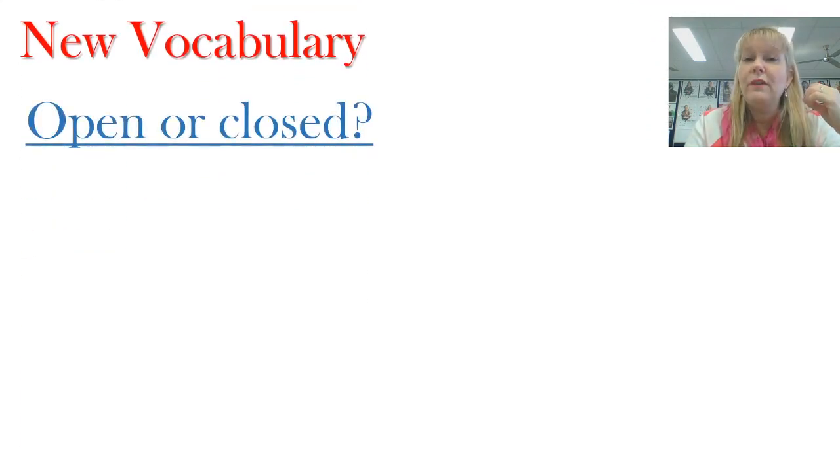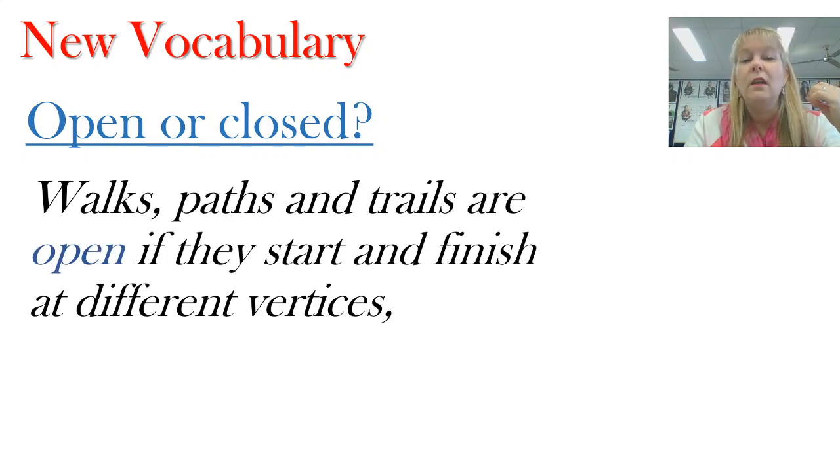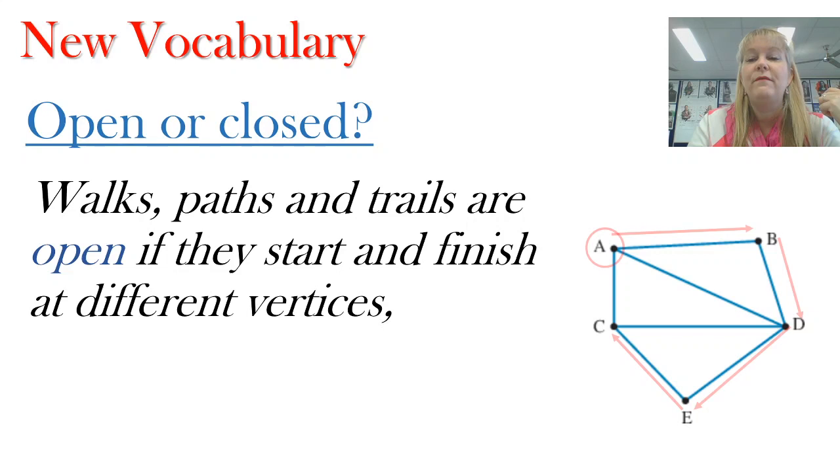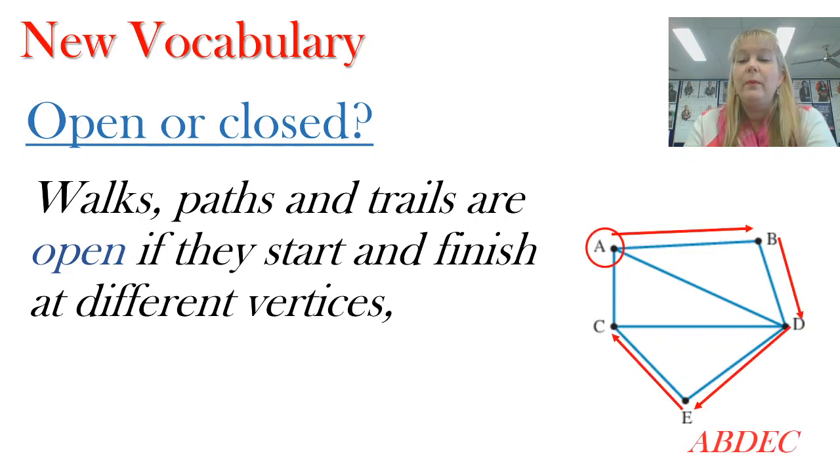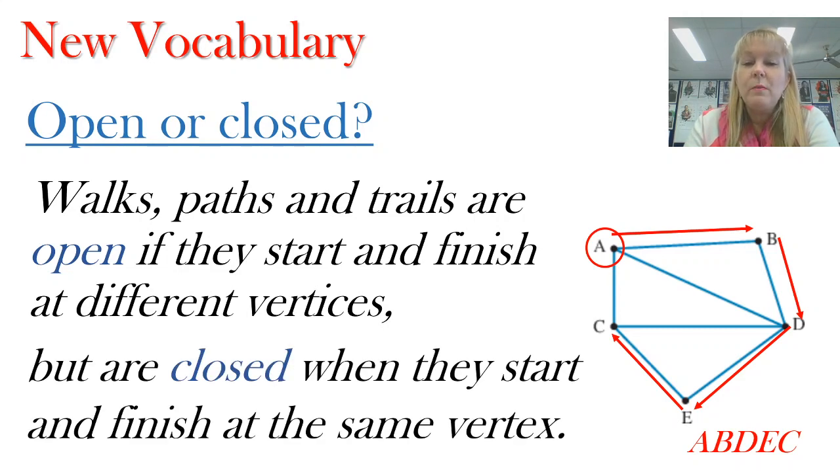Now we've got two different types of routes that we could take. One's called an open route the other one's a closed route. So we refer to an open walk an open path or an open trail and this happens if we start and finish at different vertices. So here's an example of an open walk through the network A B D E C but they are closed when they start and finish at the same place and that is indicated with the A being on the end again where I finished up and that's shown in green. That's a closed walk through the network.